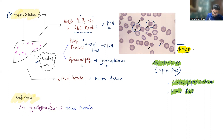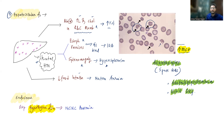Endocrine conditions can also cause anemia. The most important one is hypothyroidism, where anemia is multifactorial and most commonly presents as normocytic normochromic anemia. Various other endocrine conditions can also cause anemia through different mechanisms. That concludes this lecture on pure red cell aplasia and other forms of bone marrow failure. Thank you.